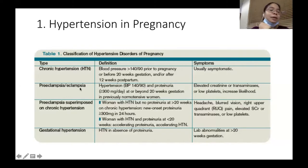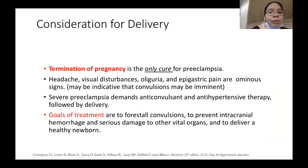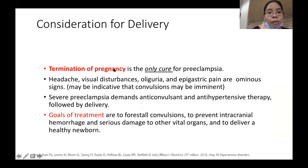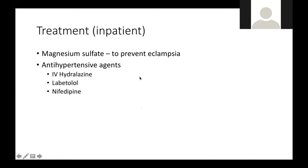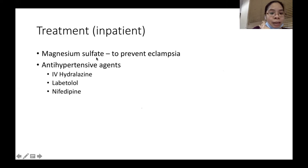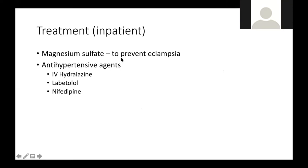Please take note of all the types of hypertensive disorders in pregnancy. The ultimate cure for preeclampsia is termination of pregnancy — the only cure is when you deliver the baby. However, you can give magnesium sulfate and antihypertensive agents. Magnesium sulfate is not an antihypertensive agent; it is given mainly to prevent seizures or eclampsia. The antihypertensive agents are hydralazine, labetalol, and nifedipine.